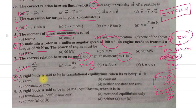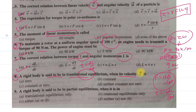The eighth question: a rigid body is said to be in translational equilibrium when its velocity is zero or it is moving with some constant velocity. Option C is the correct answer — the body is in translational equilibrium if its velocity is zero or constant.